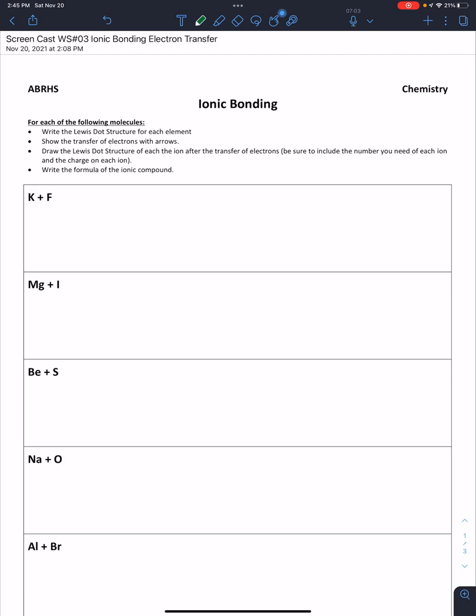First, we're going to write the Lewis dot structure or symbol for each element involved in the bond. We're going to show the transfer of electrons with arrows, and this transfer will always occur from the metal to the nonmetal. Making sure you understand which is which is going to be important.